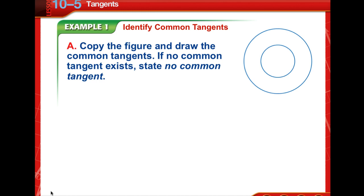So let's identify common tangents. We're to copy the figure and draw the common tangents, and if no common tangent exists, state no common tangent. So my question to you is, is there a line that's in the same plane as the circle that intersects the circle in exactly one point?